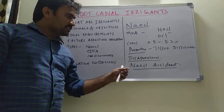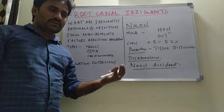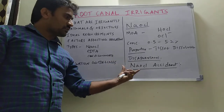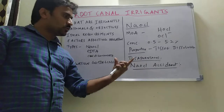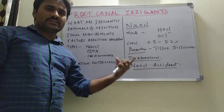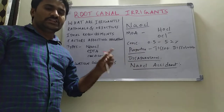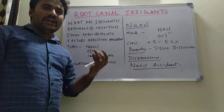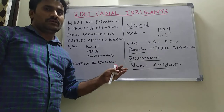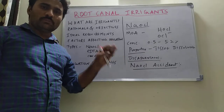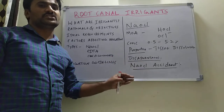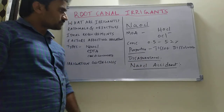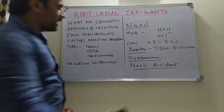To manage a sodium hypochlorite accident, we must increase the bleeding, as bleeding is a physiological response to dilute the effects. Sodium hypochlorite has caustic and deleterious effects on surrounding periradicular healthy tissues. We must reassure the patient and provide IV antibiotics and analgesics. If the patient is not under local anesthesia, we give block anesthesia to decrease the pain.